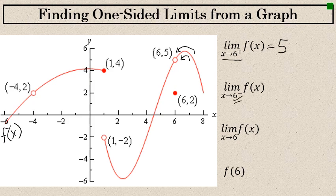The limit as x approaches 6 from the left — from the left, it's going to the same spot, approaching that same point which has a y value of 5. So the limit as x approaches 6 from the left is also 5. This means the two-sided limit as x approaches 6, since it approaches 5 from both the left and the right — that's the definition of a limit. If the limit approaches a value from the left and the same value from the right, that's the two-sided limit. The limit as x approaches 6 of f of x equals 5.